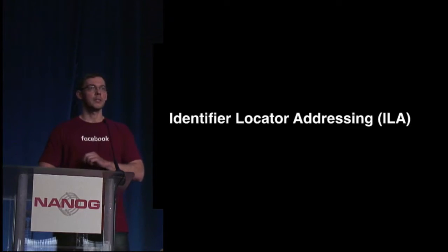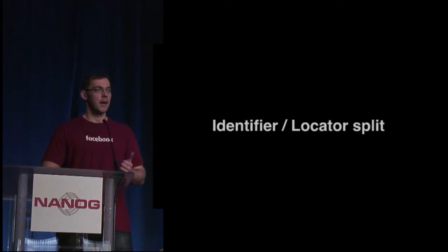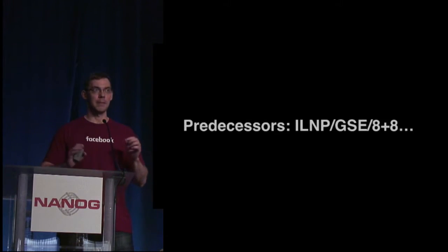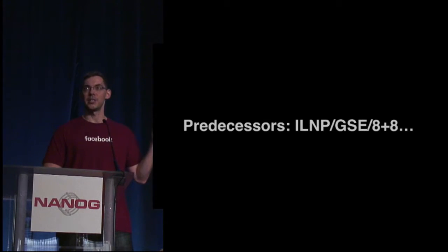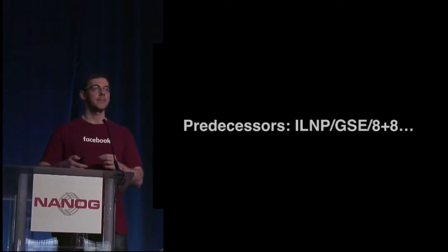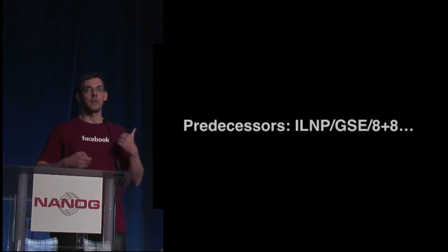ILA was one way to address this, and this is the solution we deployed so far. ILA is built on the well-known concept of identifier and locator split. You may have heard abbreviations like ILNP, GSC, 8-plus-8. This used to be a very hot topic in networking about 10 years ago, during discussions about internet table scaling. There were multiple proposals; ILNP was one of them. You may think of ILA as a technology which builds on ILNP.